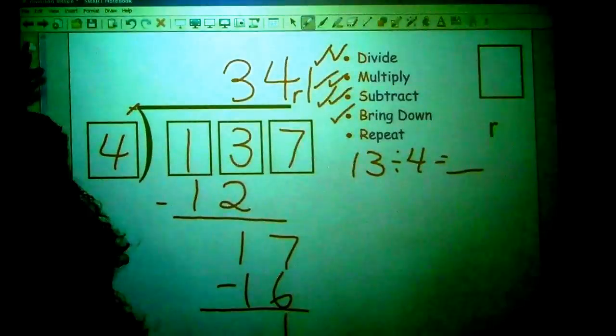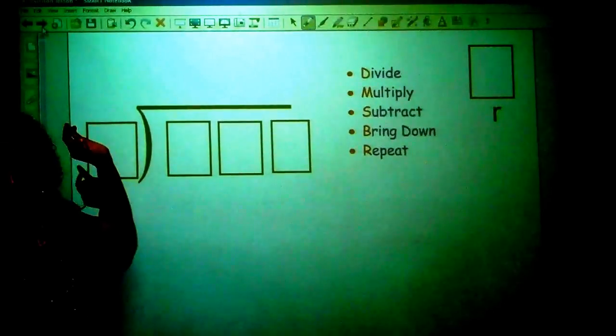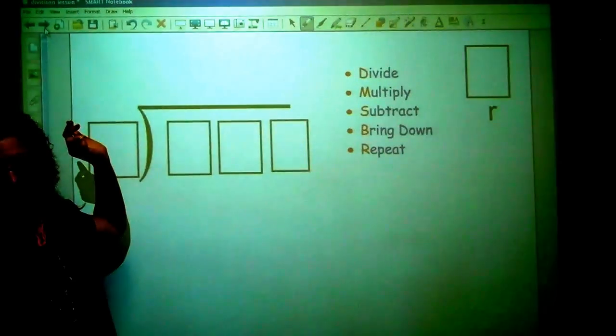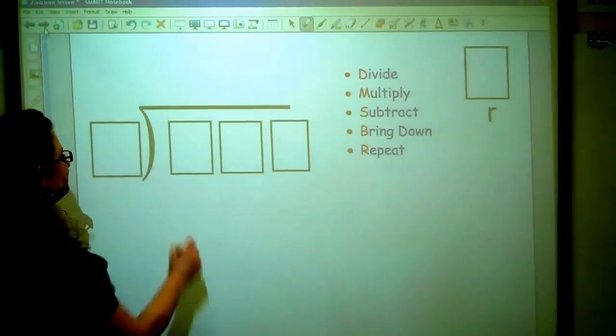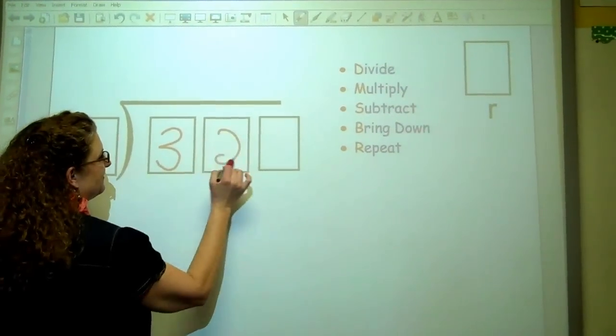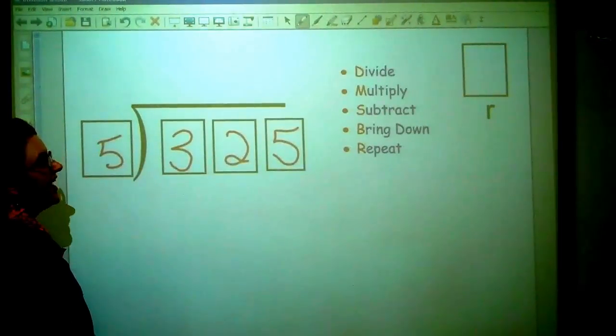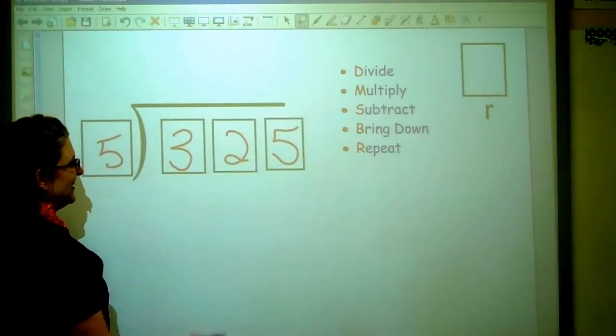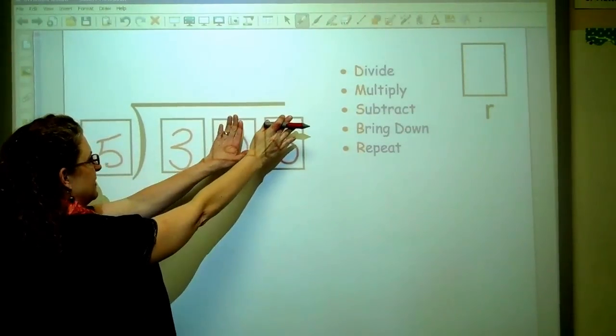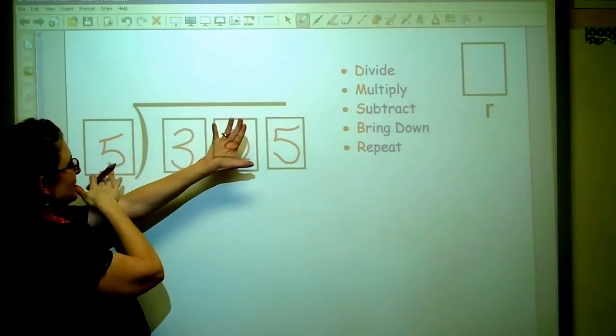So let's do one more. Let's try 325 by 5, okay? 325 divided by 5. All right. So the first thing I want to do, once again, is don't look at the other numbers and compare this number to that number.